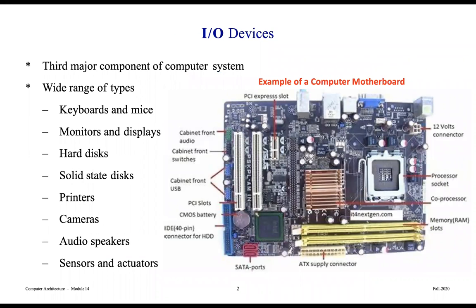I/O devices are the third major component of a computer system, and there's a wide range of I/O devices out there: keyboards and mice, monitors and displays, hard drives, solid state disks — SSDs — which are becoming quite popular, printers, cameras, speakers, sensors and actuators, and all kinds of things.